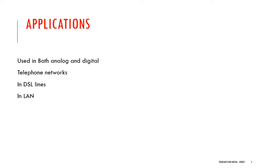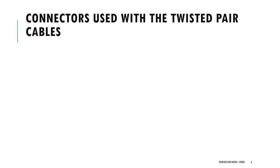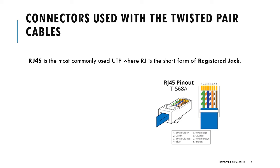The applications of twisted pair: twisted pair cables are used in both analog and digital transmission. It is commonly used for telephone networks, can be used in DSL lines and in LAN connectivity. Connectors used with twisted pair cables are RJ45, which is the most commonly used connector for unshielded twisted pair — RJ45 stands for registered jack.